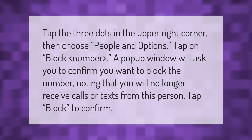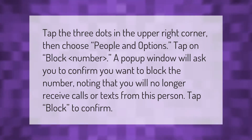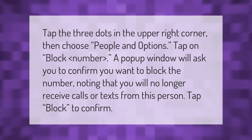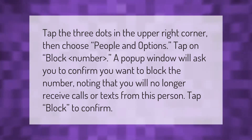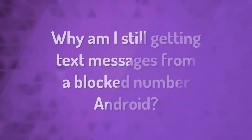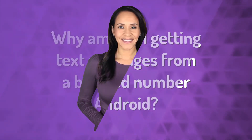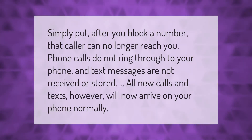Tap the three dots in the upper right corner, then choose People and Options. Tap on Block, and a pop-up window will ask you to confirm you want to block the number, noting that you will no longer receive calls or texts from this person. Tap Block to confirm.